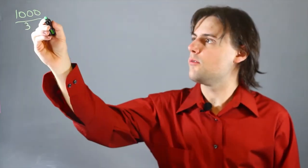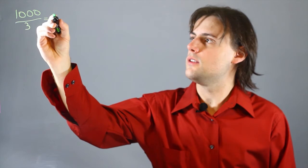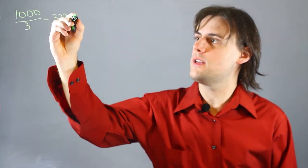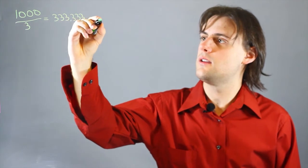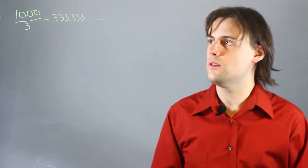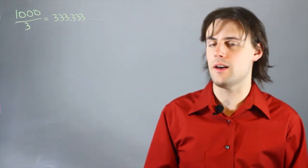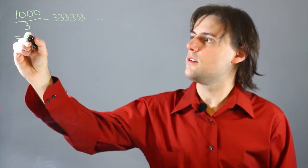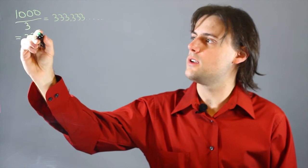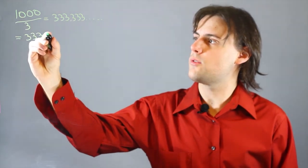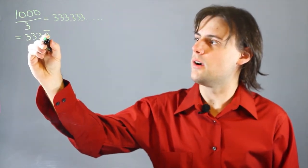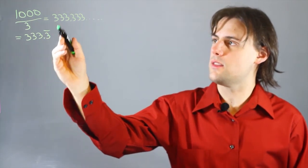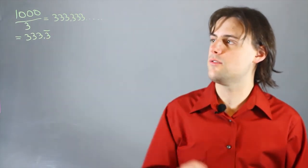In decimal form, what we end up with is 333.333, continuing off into an infinite place after the decimal. We normally write this as 333.3 with a repetend bar over the 3 after the decimal place, indicating that this number is repeated forever.